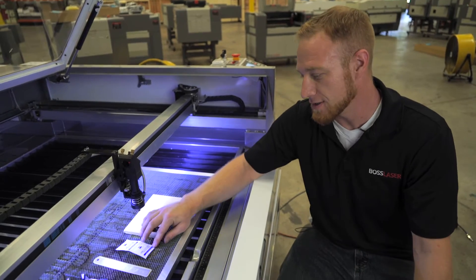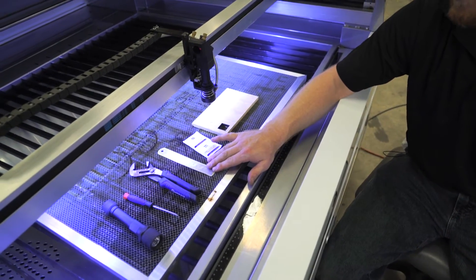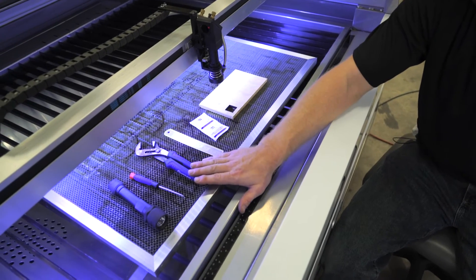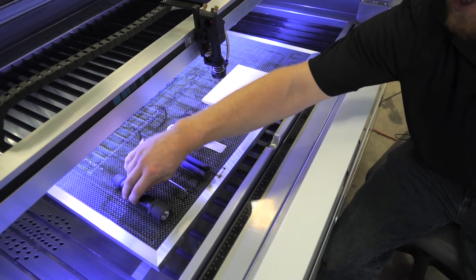Some of the things you're going to need are some lens cleaning wipes, the ruler that comes in your toolbox, crescent wrench, small Phillips screwdriver, and maybe a flashlight.